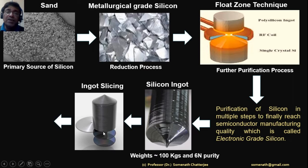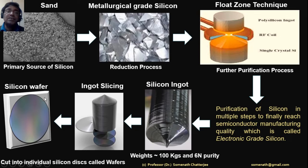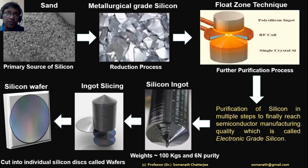From the silicon ingot, we have to slice the silicon to get the silicon wafer — which is the topic of our interest. Here I am not discussing the process from wafer to integrated circuits; that is another topic, and in my previous videos you can find things like bipolar junction transistors.